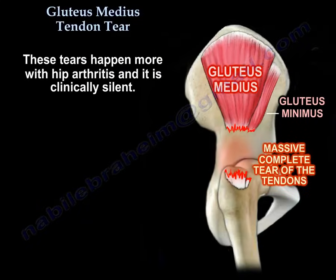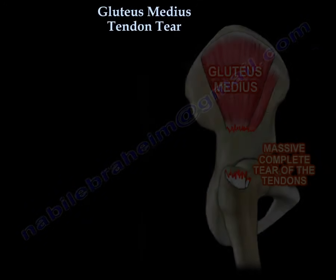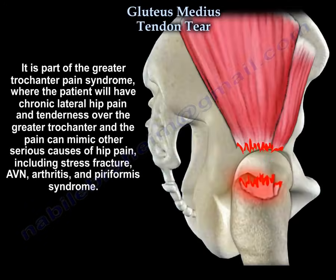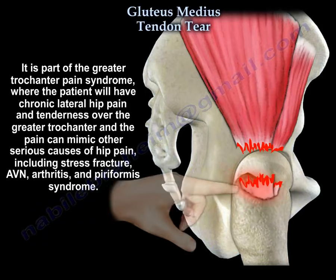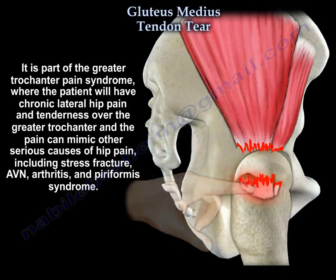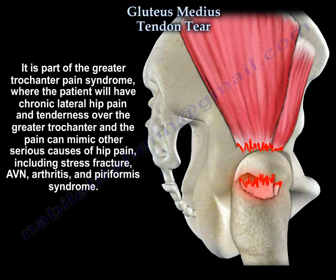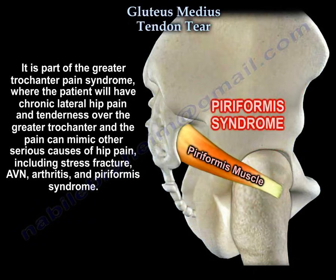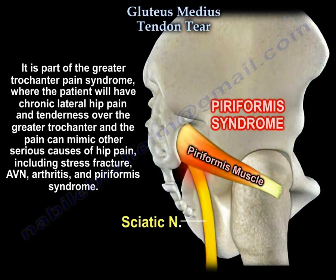These tears happen more with hip arthritis and are clinically silent. They are part of the greater trochanter pain syndrome where the patient will have chronic lateral hip pain and tenderness over the greater trochanter. The pain can mimic other serious causes of hip pain including stress fracture, AVN, arthritis, and piriformis syndrome.